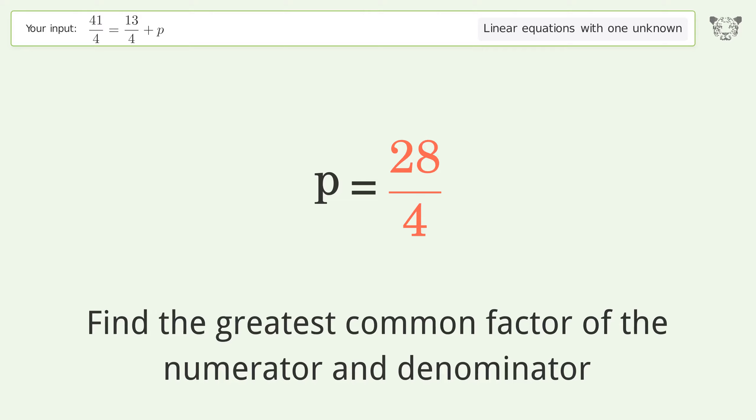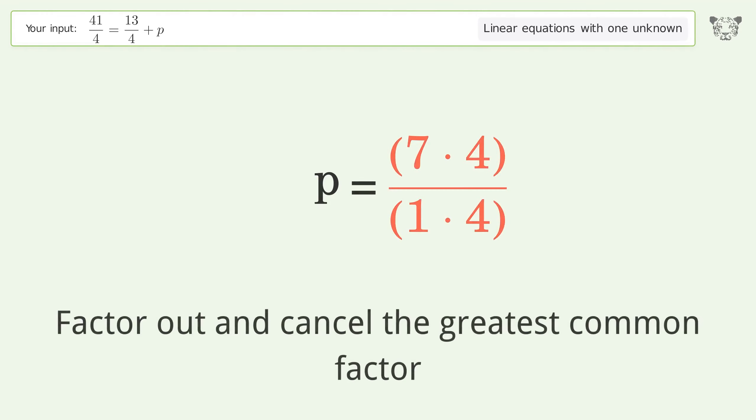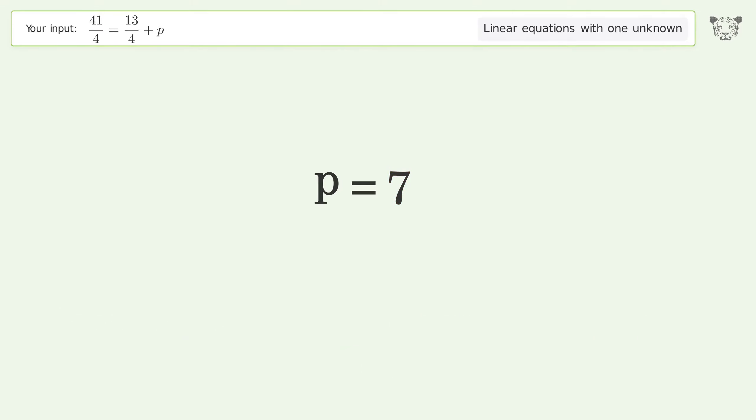Find the greatest common factor of the numerator and denominator. Factor out and cancel the greatest common factor. And so the final result is p equals 7.